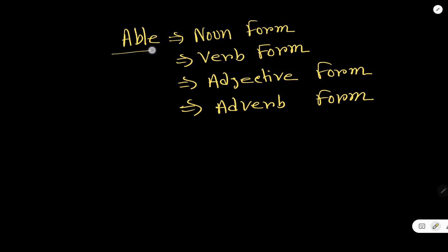Able is a word, right? And we will learn four different forms for this word. Look, the noun form of able is ability, A-B-I-L-I-T-Y.